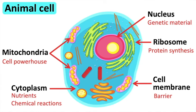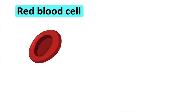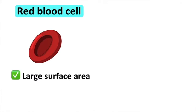Not all animal cells look the same, because animal cells are specialised for their functions. For example, red blood cells have a biconcave shape and no nucleus. This provides a larger surface area in order for the red blood cells to absorb and carry oxygen in the blood.